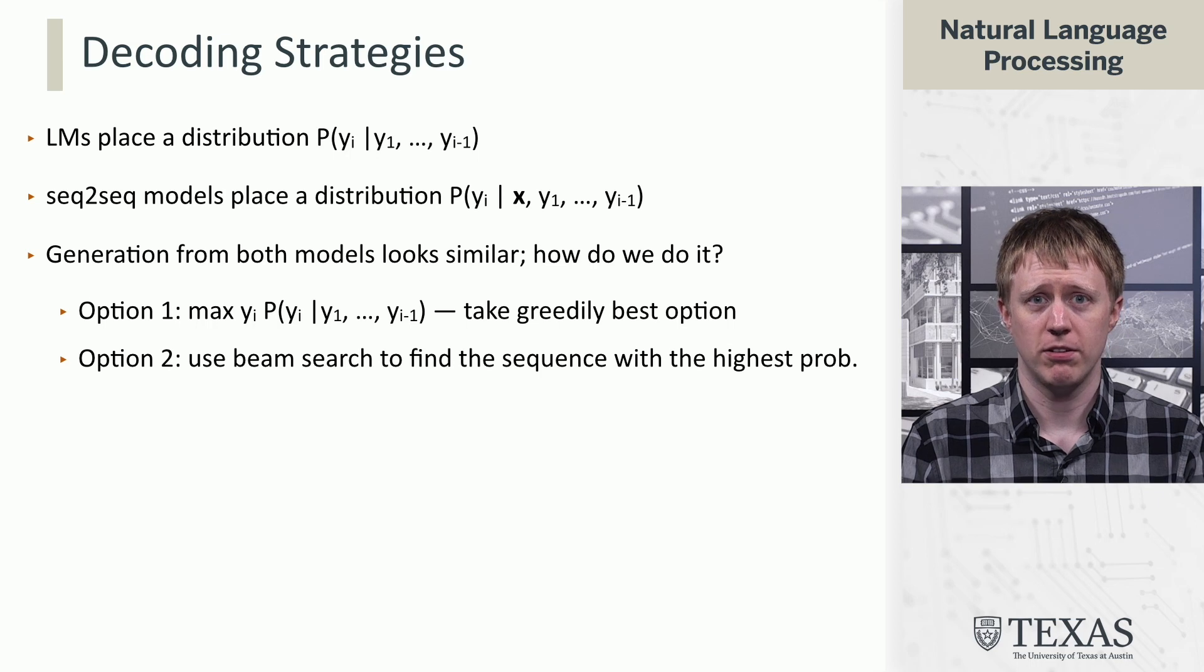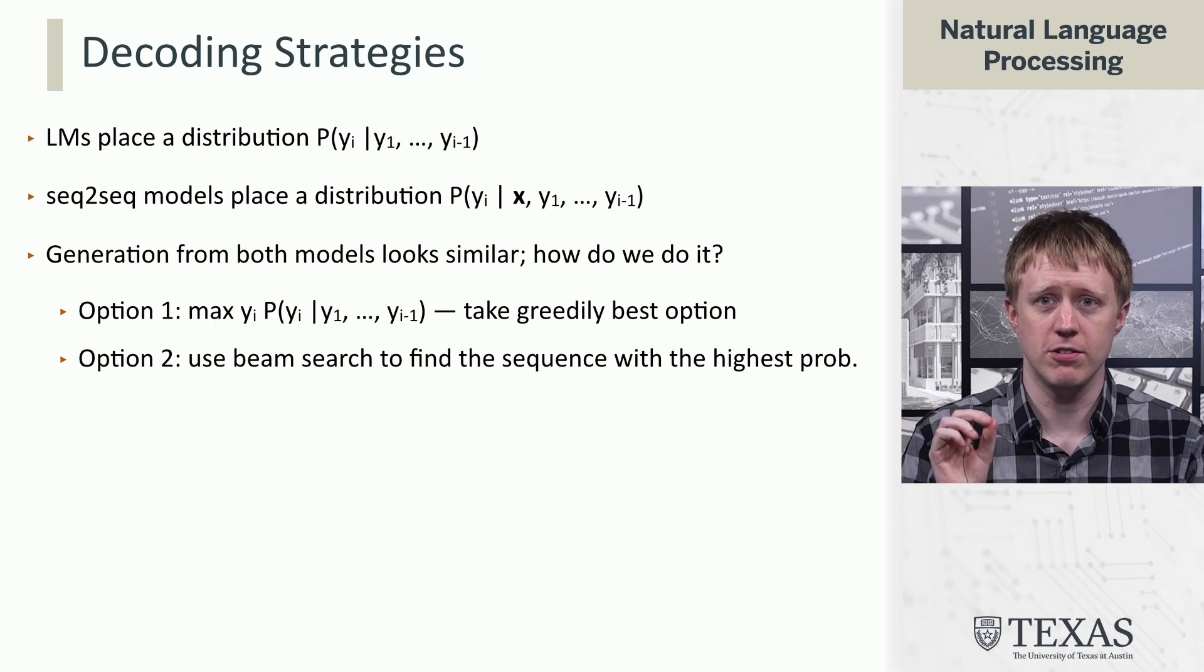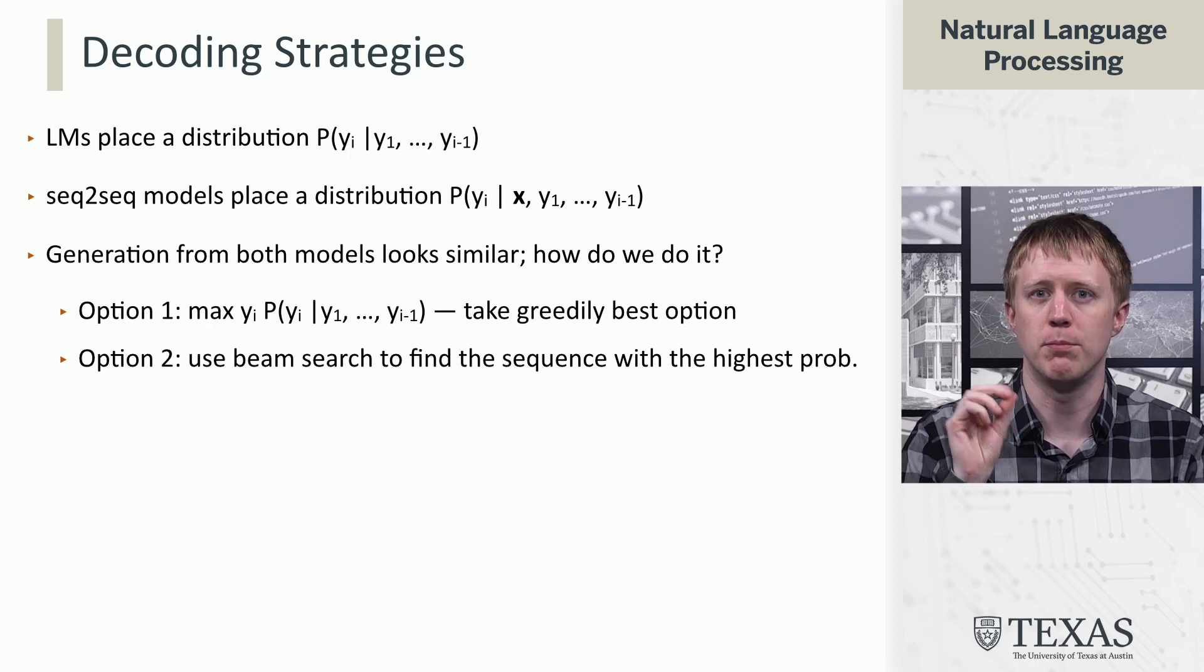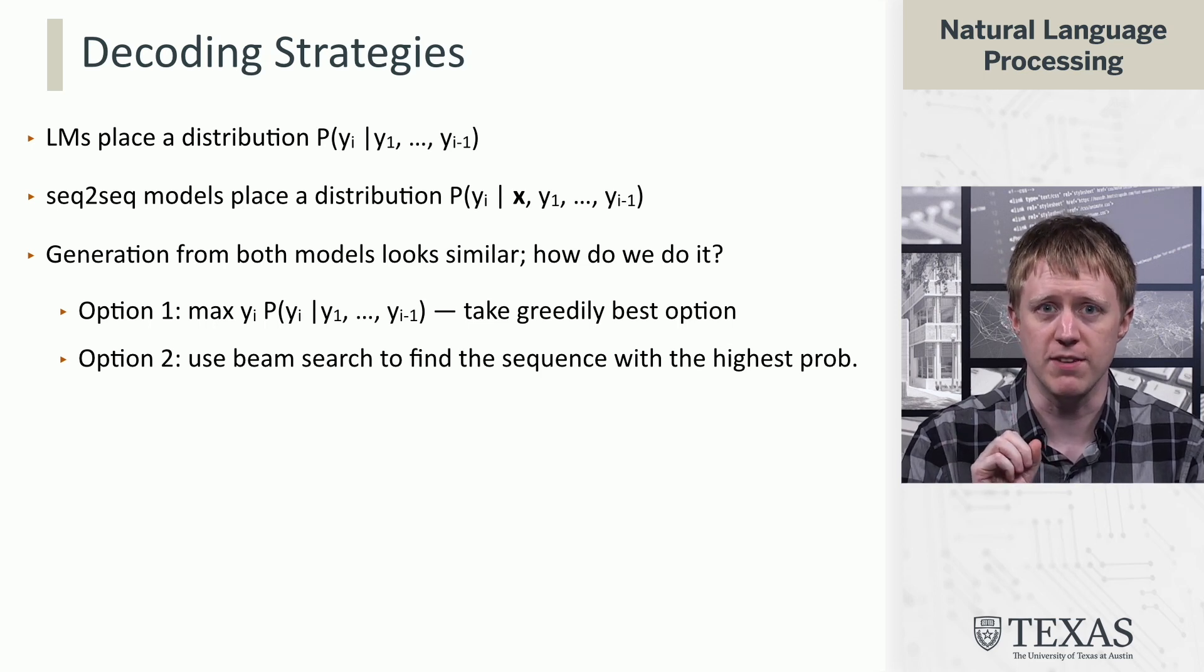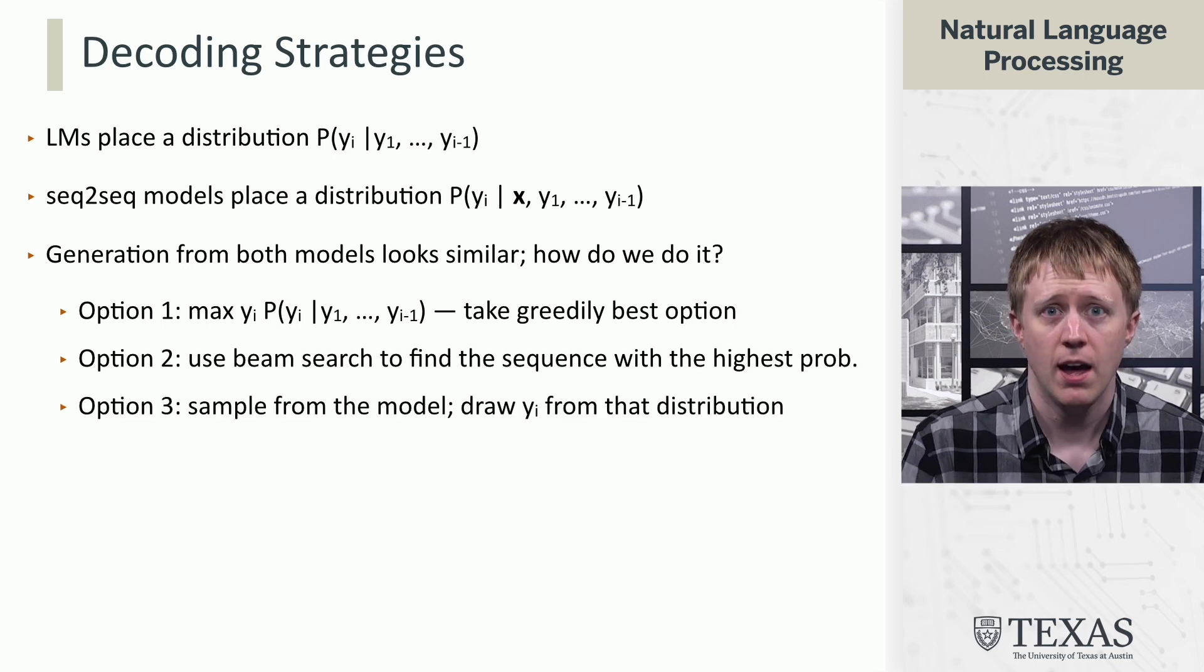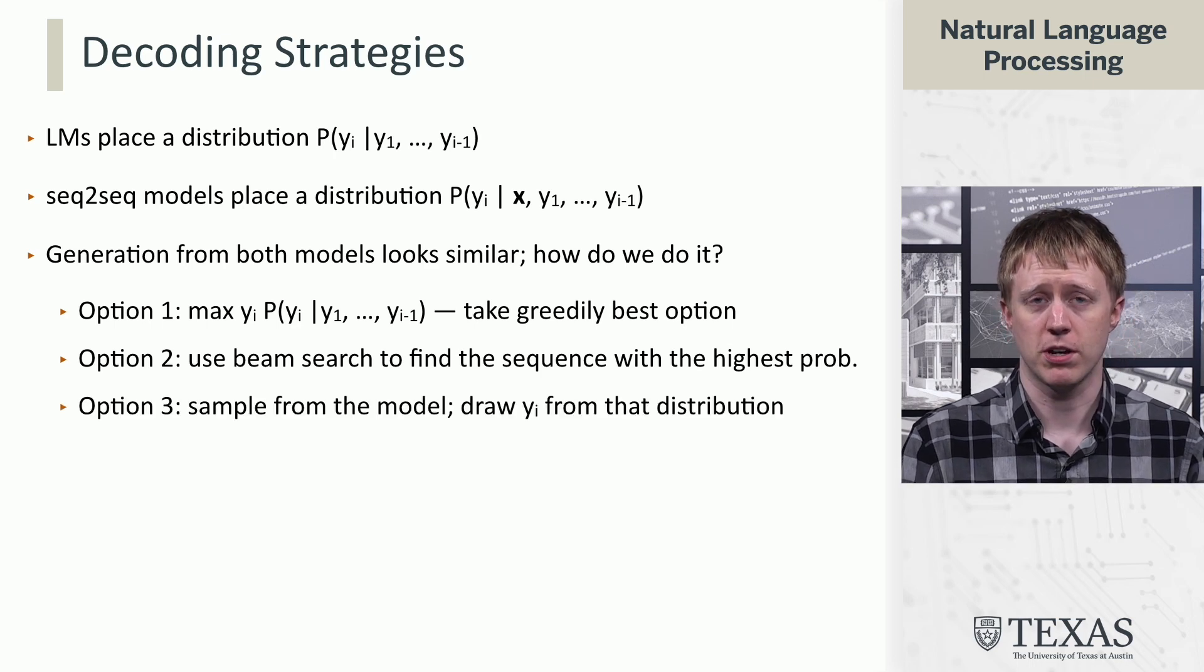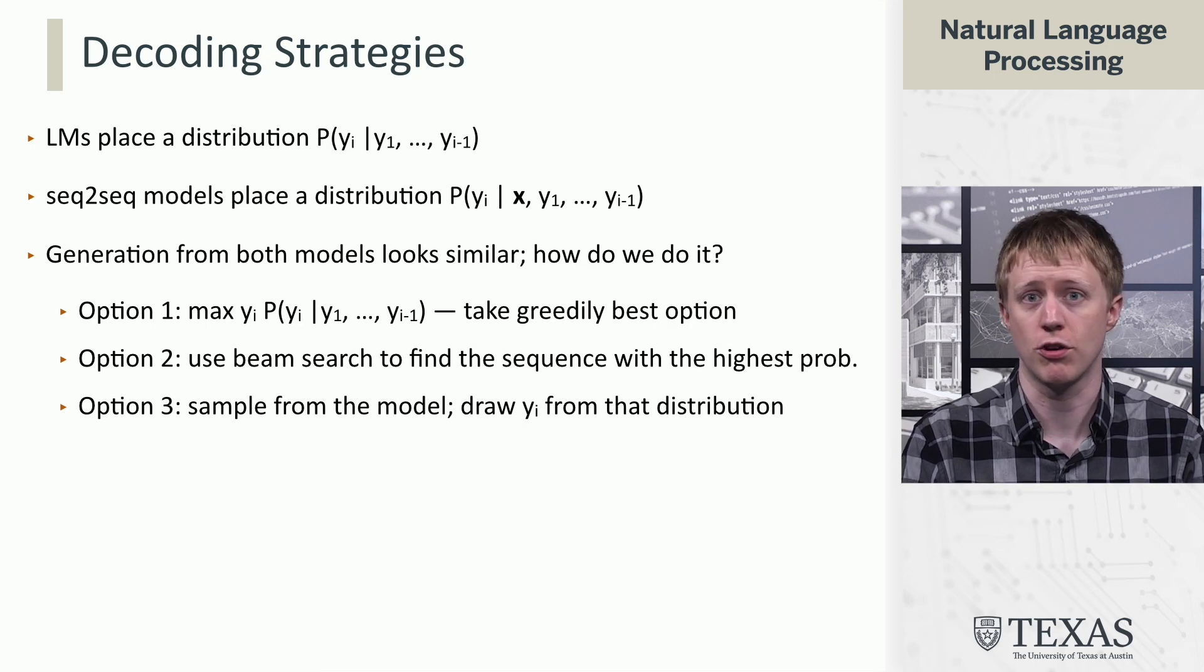The one we're going to talk about right now is using beam search, which is going to be an improved version of greedy search that's going to allocate a little bit more computation but ideally find something with even higher probability. And the third option, which we'll talk about later, is drawing samples from the model—rather than getting the most likely thing, instead draw a random thing.